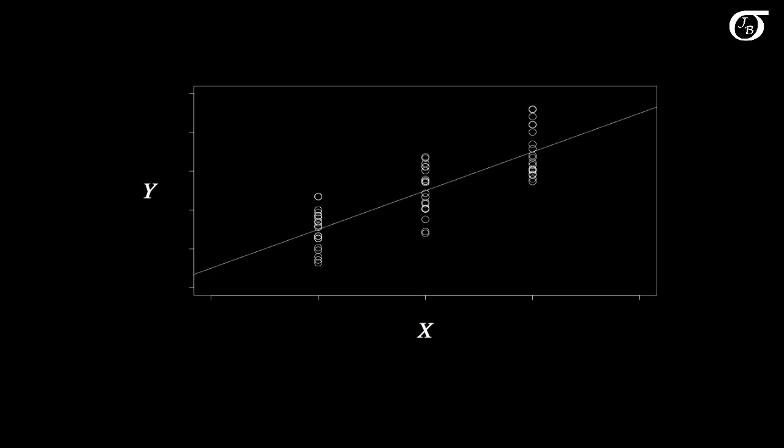There is one more parameter that comes into play when we do any statistical inference. And that parameter is sigma squared, which represents the true variance of y at any given value of x.